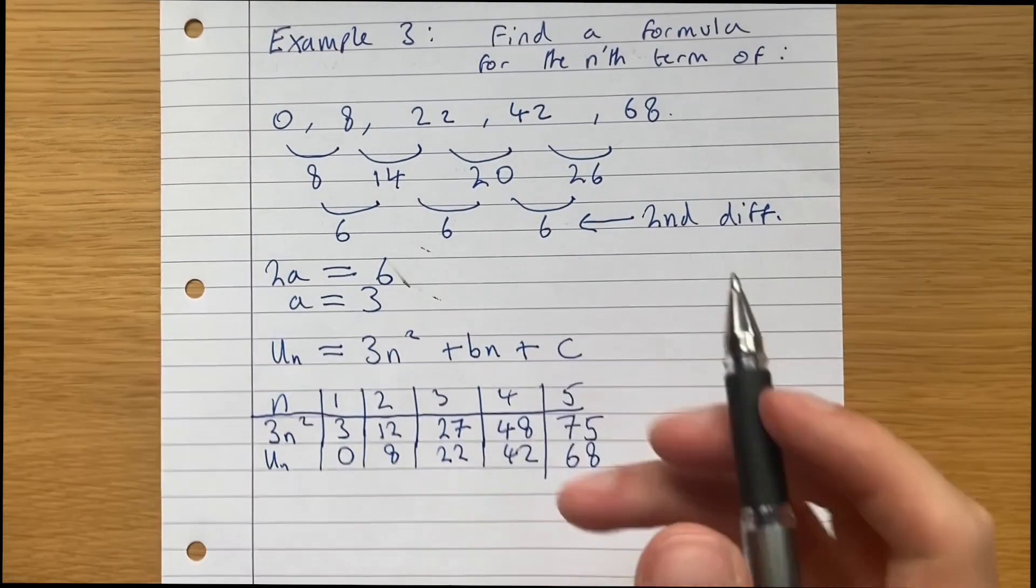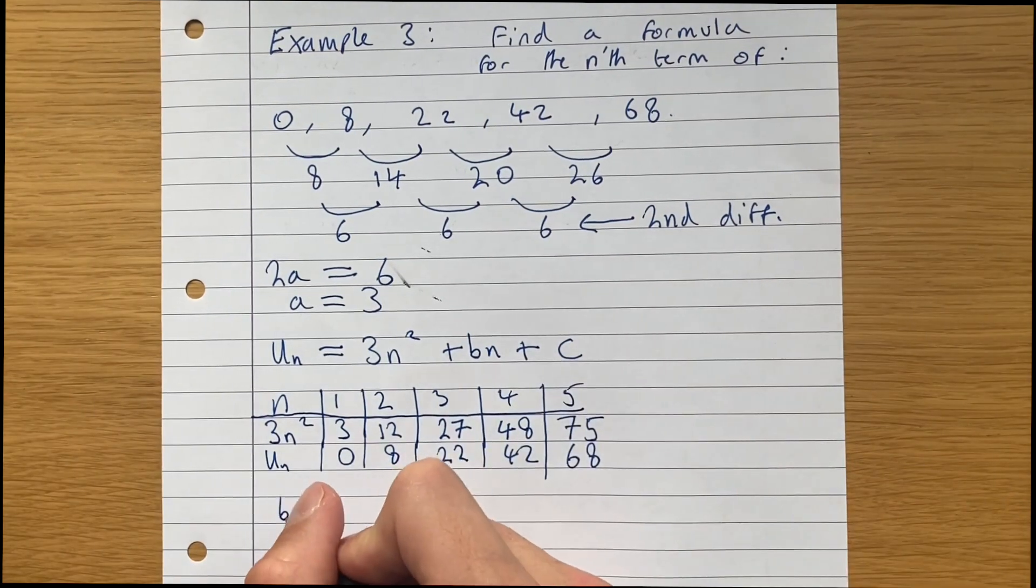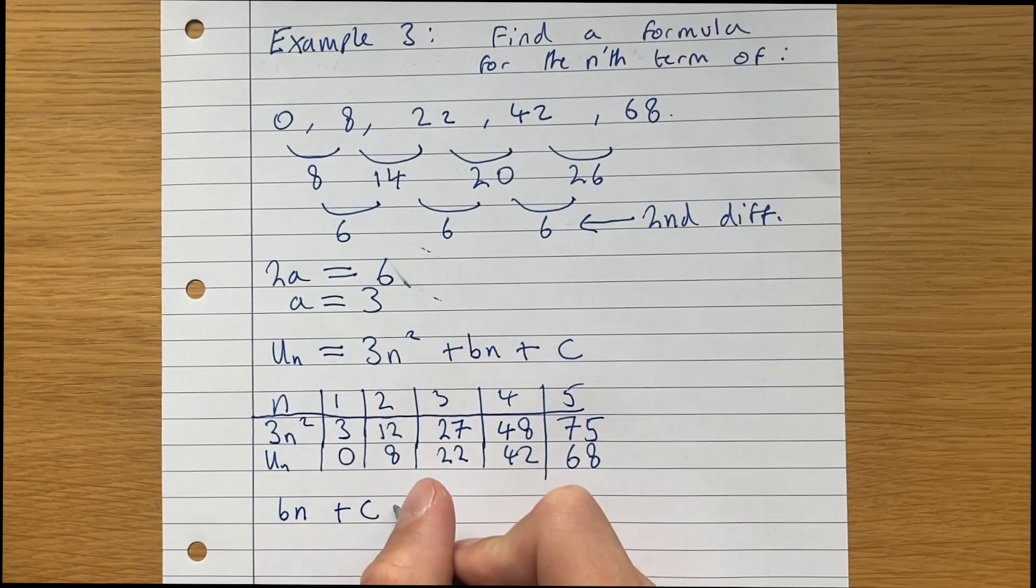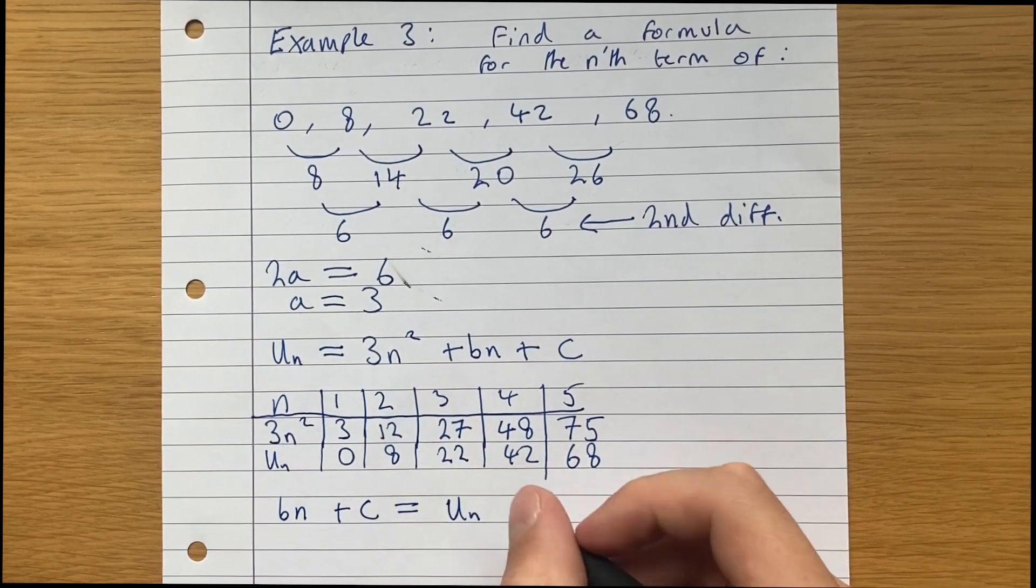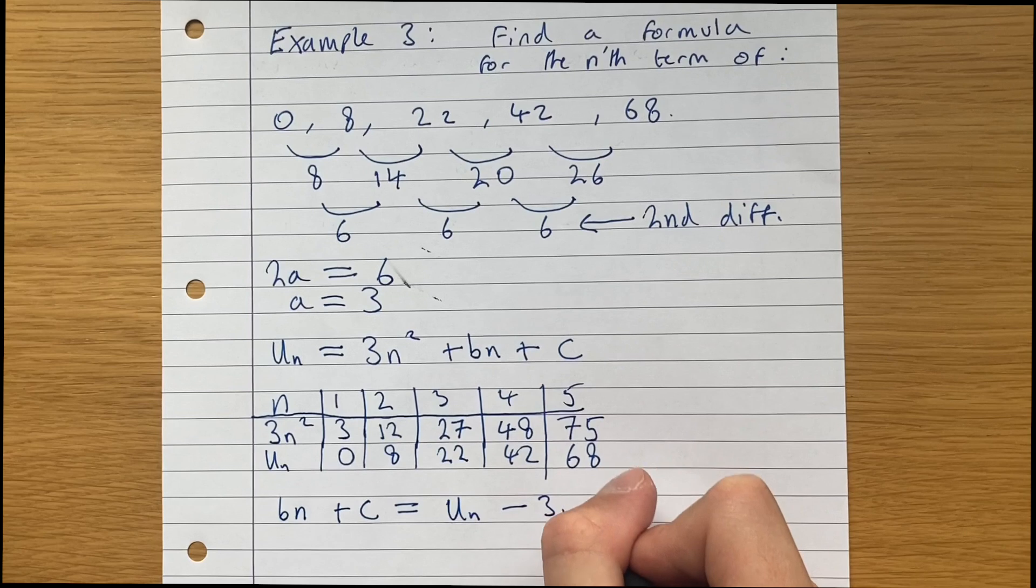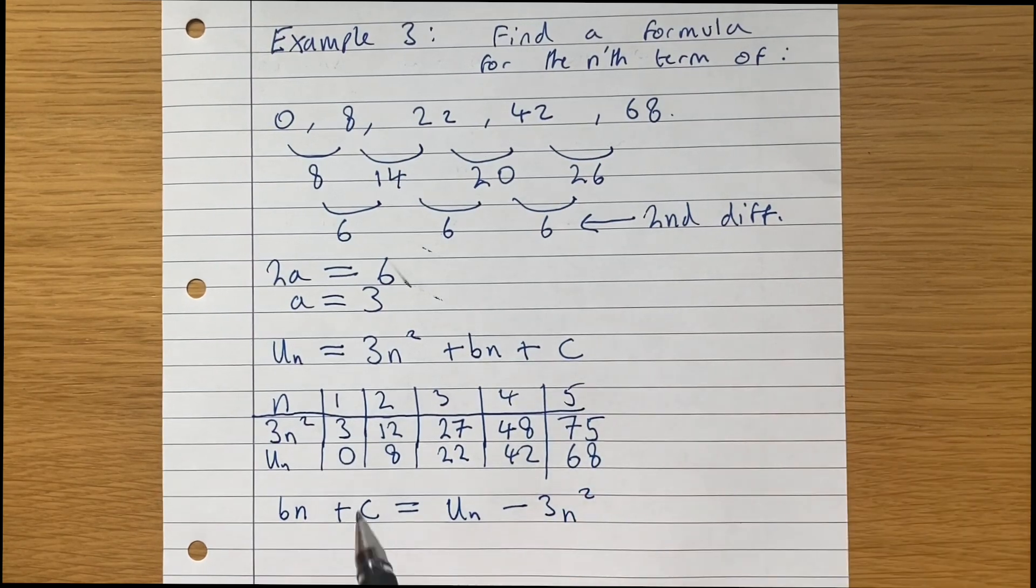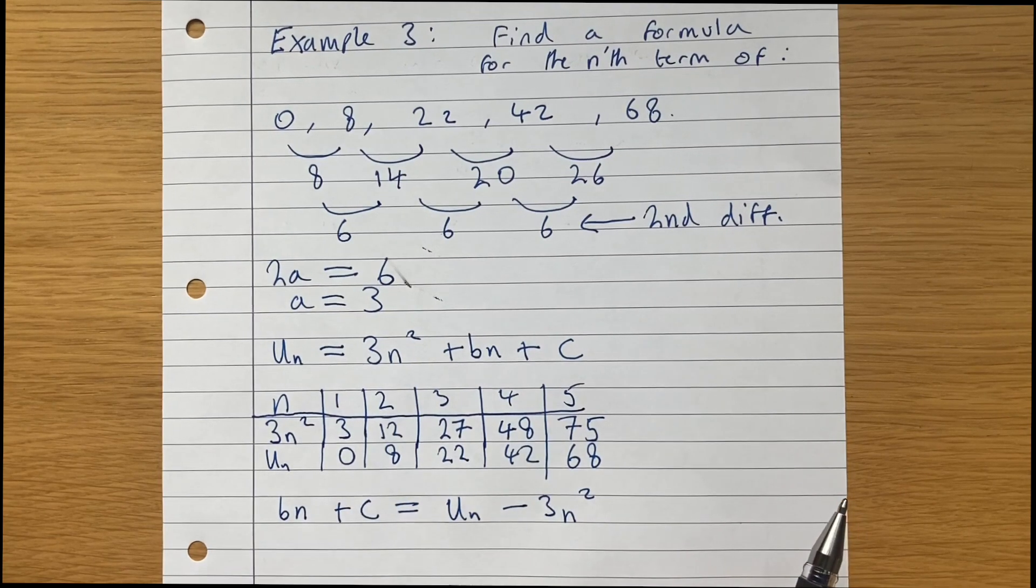So what we can do is rearrange this and say that bn plus c is equal to un minus 3n squared. Because we're trying to calculate the values of b and c, and we know both of these, we know our sequence and we know what 3n squared sequences,